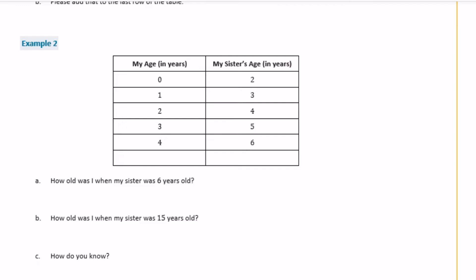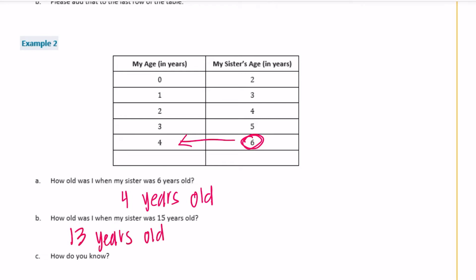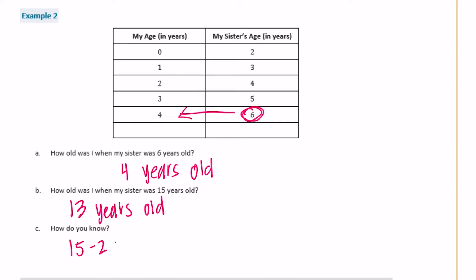Example 2. Same chart again. This time it wants to know how old was my sister when I was 6? So we have y and y plus 2. This time they're going backwards — when the sister is 6, how old are you? Well, you would be 4 years old. So if we have the sister's age, we can get to my age by subtracting 2. Instead of adding 2, we just work backwards and subtract 2. How old was I when my sister was 15 years old? Well, 15 minus 2 would be 13 years old.